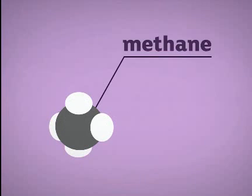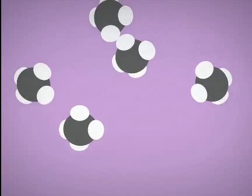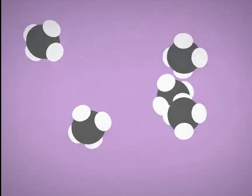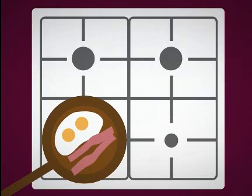Carbon and hydrogen can join to make a new compound called methane. Methane has completely different properties to the elements that it is made from. It is a colourless gas that burns really well. We use it as a fuel.